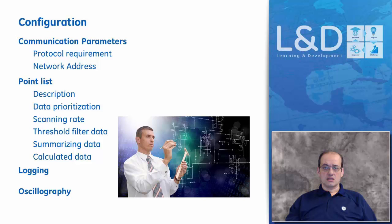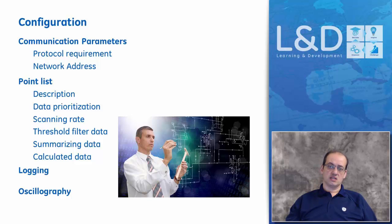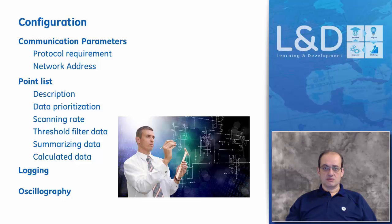Protocols sometimes have limitations based on the communication media. Whether the communication is networked or serial, the speed of communication determines the maximum message size the protocol can support. At high speed you can transmit 100 megabits, but at very low speed like 300 bits per second it may not be feasible to transmit large messages of 256 bytes, 100 bytes, or 1,000 bytes of data.